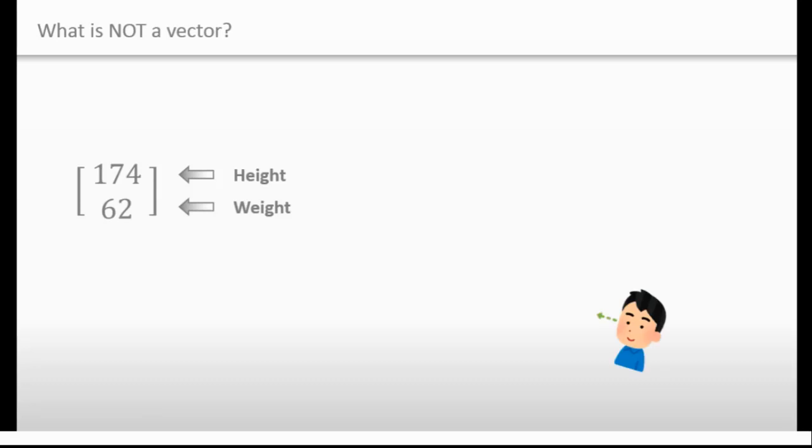If Smith looks at the matrix, he can describe the matrix in this way. It's easy, right? What if Johnson looks at the matrix? This is her coordinate system. Even if she looks at the matrix, the components are still 174 and 62.